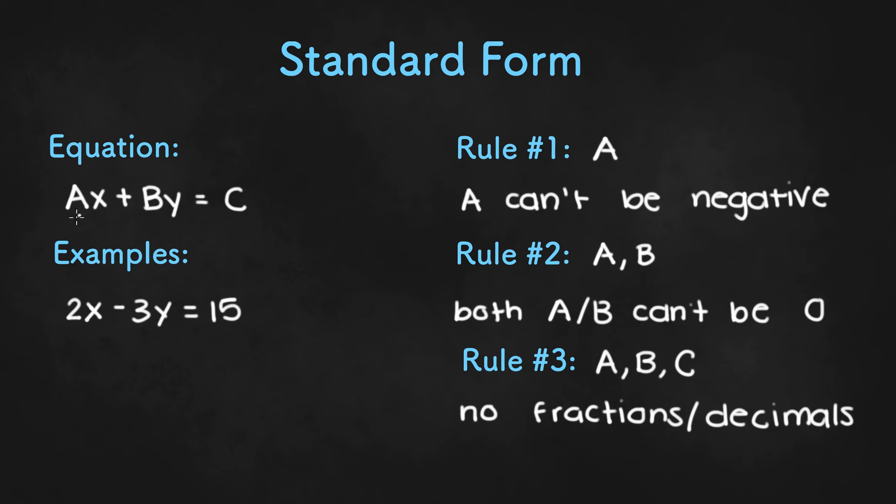Now if A equals 0, then this whole term would be 0 and we would have 0 plus By equals C or By equals C. So something like negative 3y equals 15 would also be in standard form.